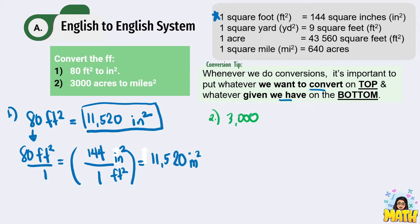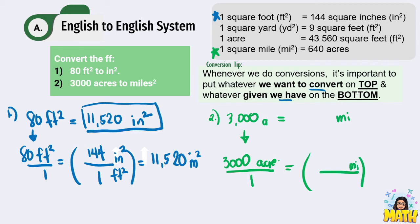Next: convert 3,000 acres to square miles. We can use the conversion 1 square mile equals 640 acres. Following the same rule: 3,000 times 1 divided by 640 gives us 4.6875 square miles.